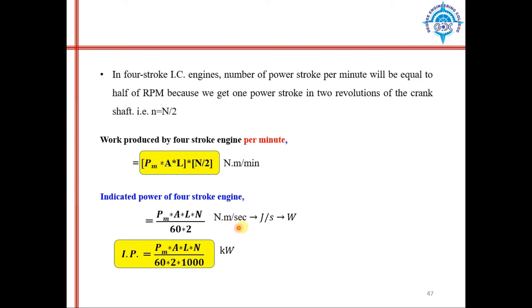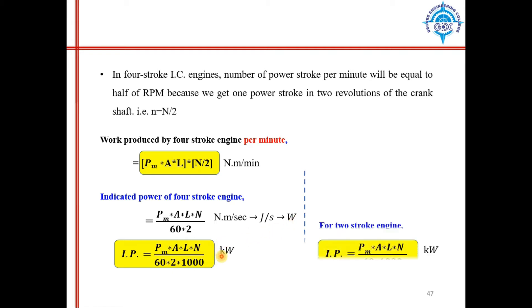We convert minutes to seconds, giving units of Newton-meters per second. Newton-meter is Joule, and Joule per second is Watt, so this gives power in Watts. The indicated power of a four-stroke engine is P·L·A·N divided by 60, where the number of power strokes is N/2, divided by 1000 to convert Watts to kilowatts.